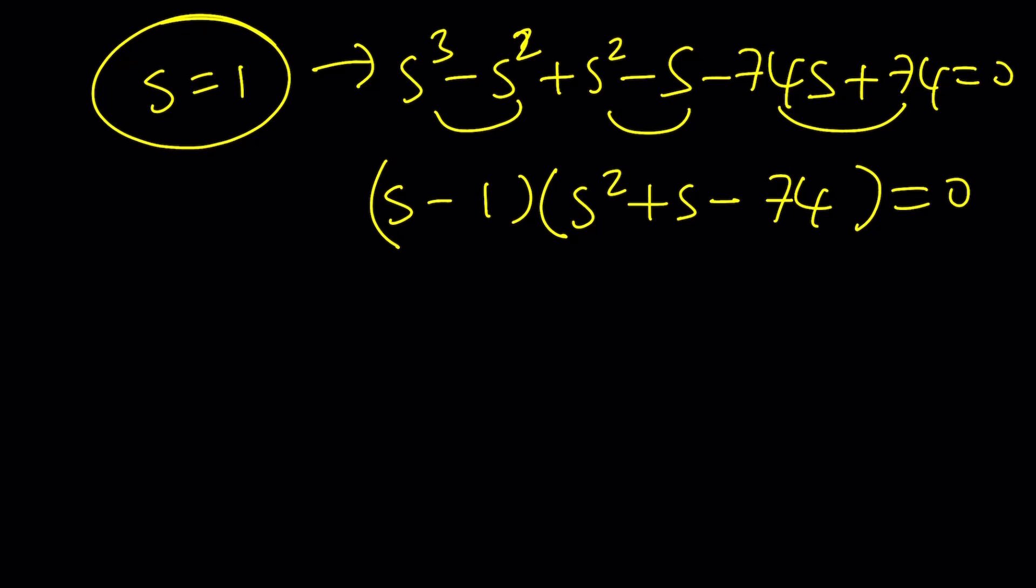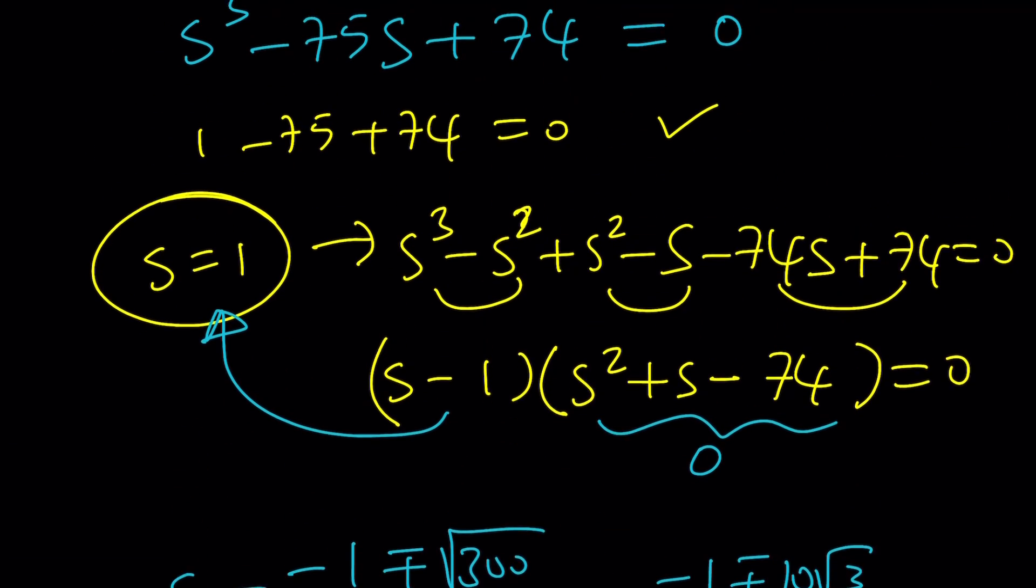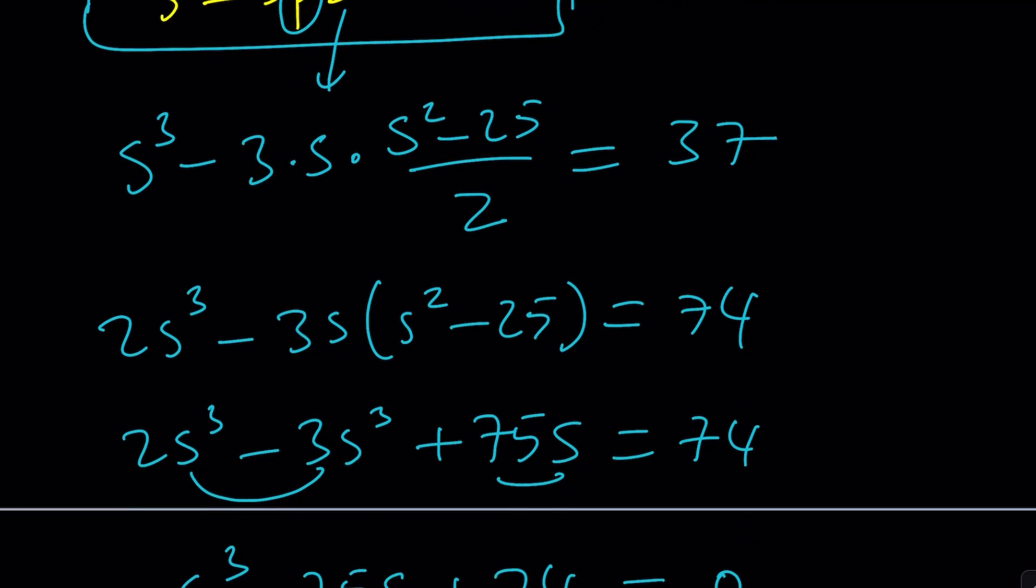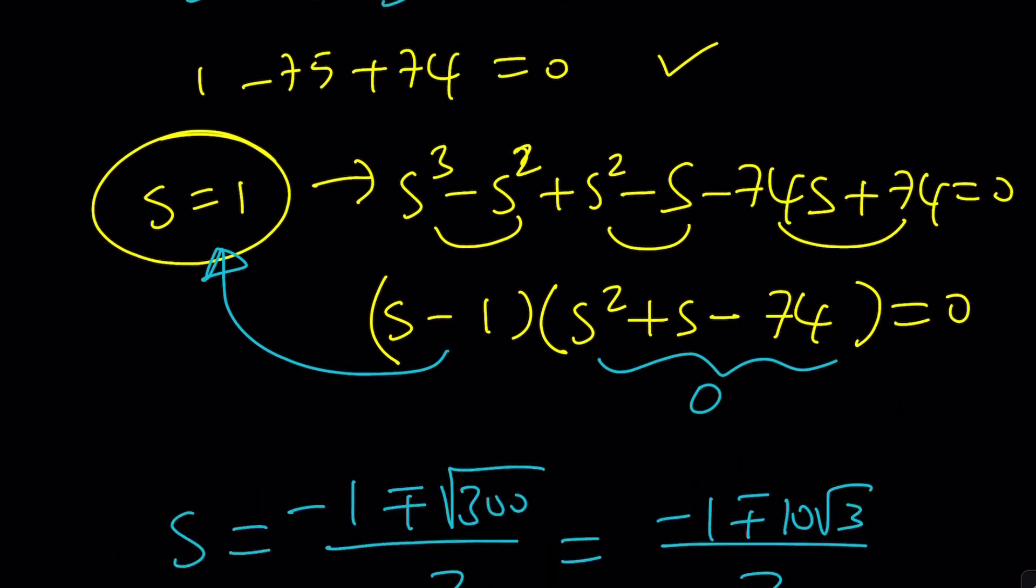One of the factors is going to be s minus 1 because s equals 1 is a solution. And the other factor is going to be s squared plus s minus 74. So here we get two equations. This one gives us s equals 1. This one is going to give us two radical solutions. And s from here is going to be, if you use the quadratic formula, negative 1 plus minus the square root of 300 divided by 2. And I think that you can write it as negative 1 plus minus 10 root 3 divided by 2. If s is equal to 1, I can substitute: 1 minus 25 is negative 24 divided by 2 is negative 12. So p is going to be negative 12.